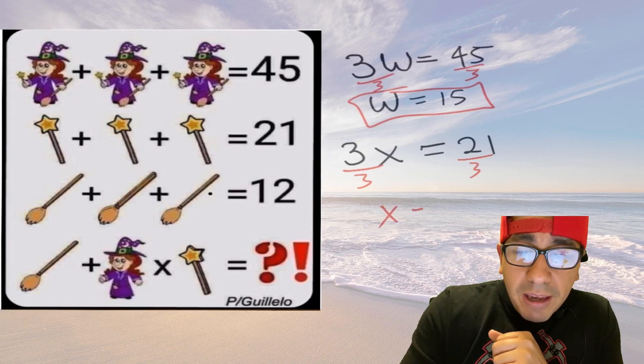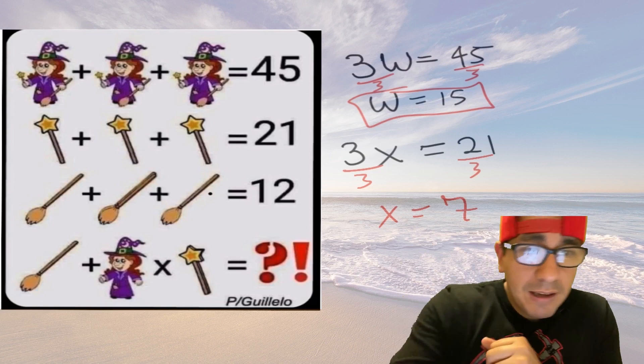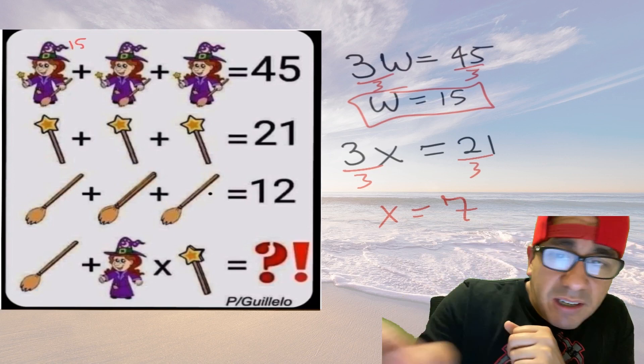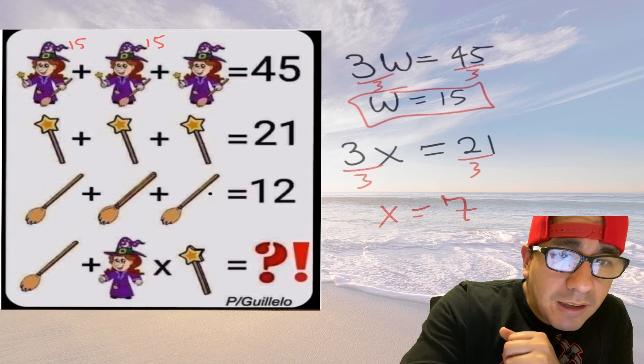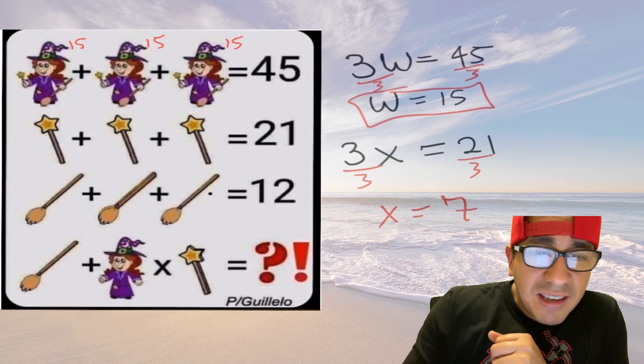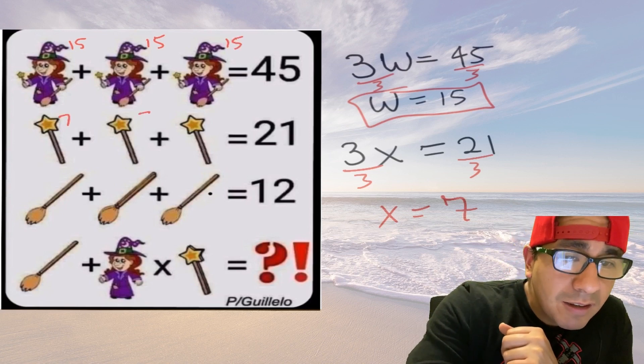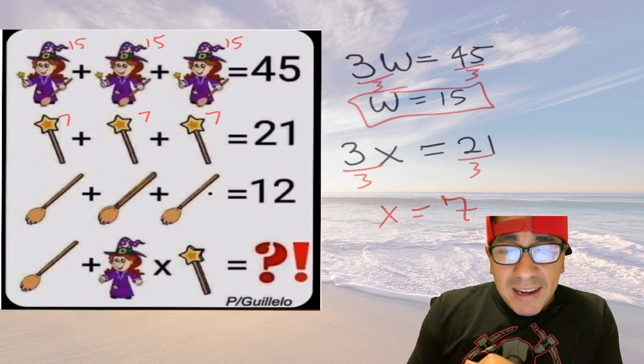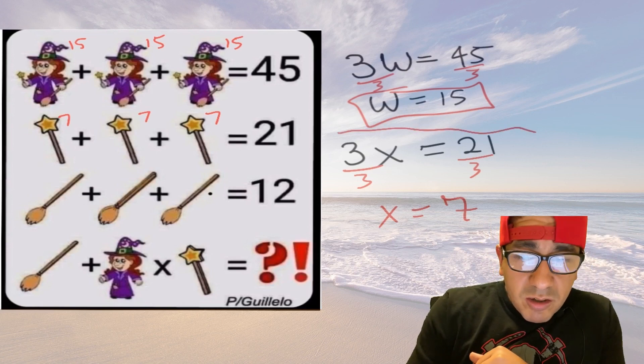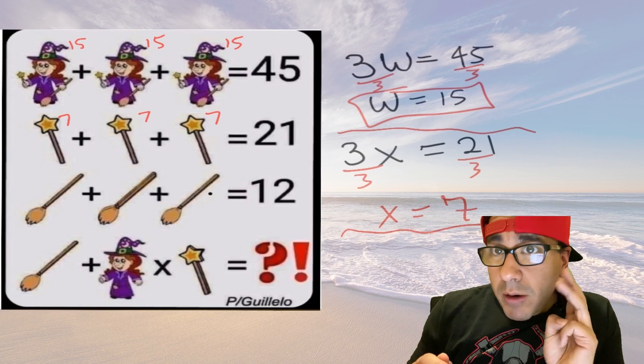So the number of wands, each value is worth seven. So let's take a look, each witch is 15 and then each one we said is seven. And then now there's equation one, equation two, equation three.